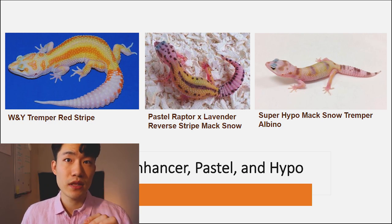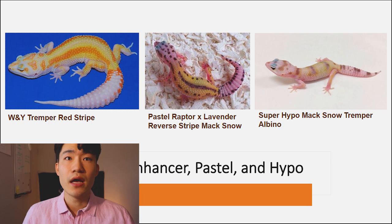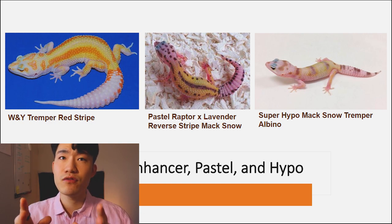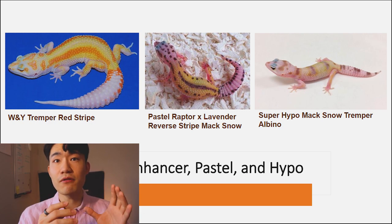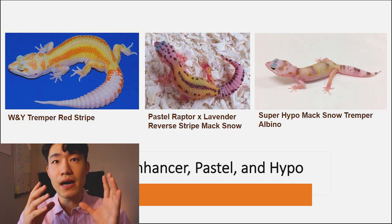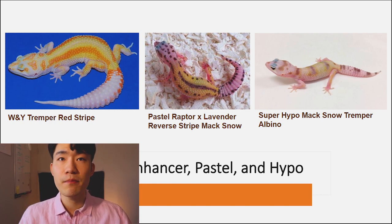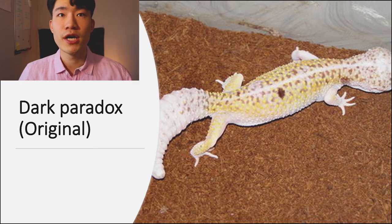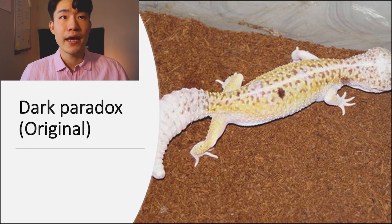In the middle is a mix between pastel reptile and lavender — they call it a rebirth stripe max snow. This leopard gecko doesn't have WY; I'm just giving you a good example of the colors that actually happen to WY when you mix with it. On the right side is the super hypo max snow albino — this also doesn't have WY genetics, but it gives you an example of hypo patterns. Normally, a normal leopard gecko has a lot of patterns on their body and head, but with hypo, it becomes less likely to have those patterns or dots.